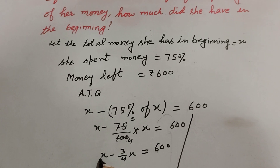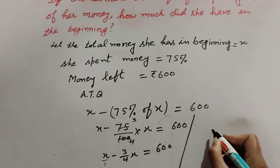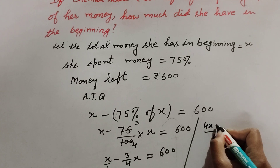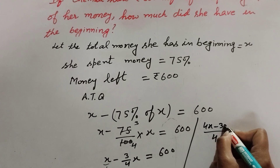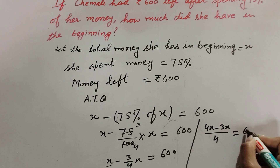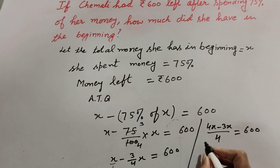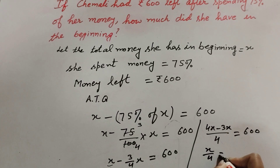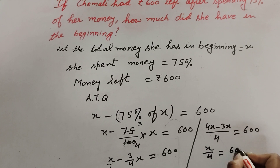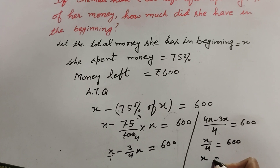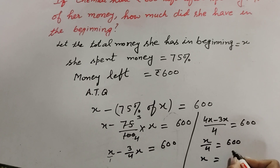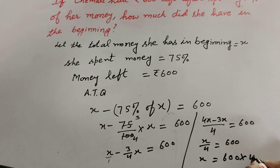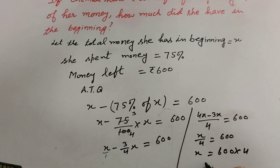Now we take the LCM. The LCM of the denominators is 4, giving us 4x minus 3x equals 600 times 4. So 4x minus 3x equals x over 4 equals 600. Transposing 4 to the right-hand side, x equals 600 multiplied by 4.